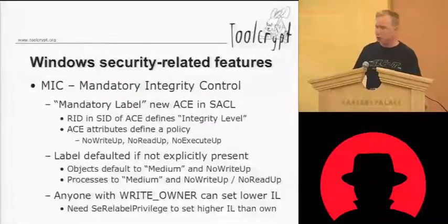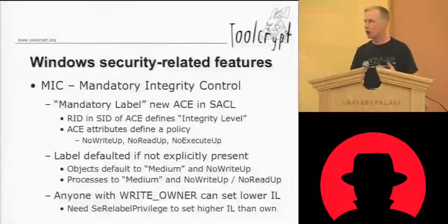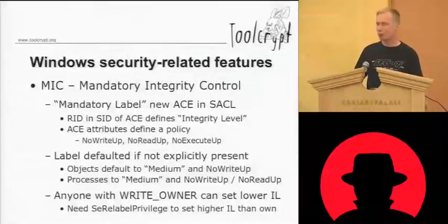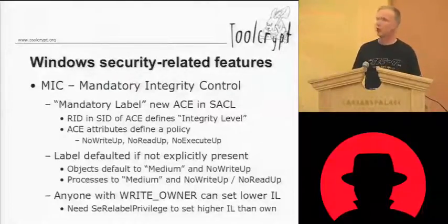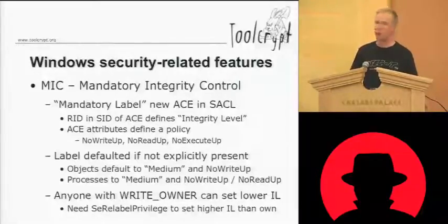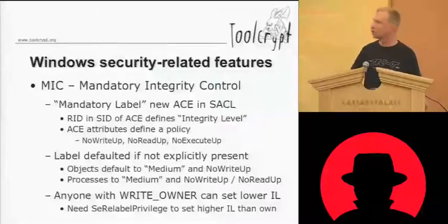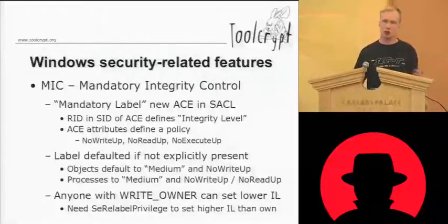This is controlled by a new concept called Mandatory Integrity Control. It's mandatory in that it's always checked before granting access to a new system resource. It's implemented via a new access control entry in the System Access Control List (SACL) called a mandatory label ACE. The SID in the mandatory label ACE doesn't identify a user or group — it identifies what's called an integrity level, which is a number from zero upward. Default assigned levels include low, medium, medium-plus, high, and system.